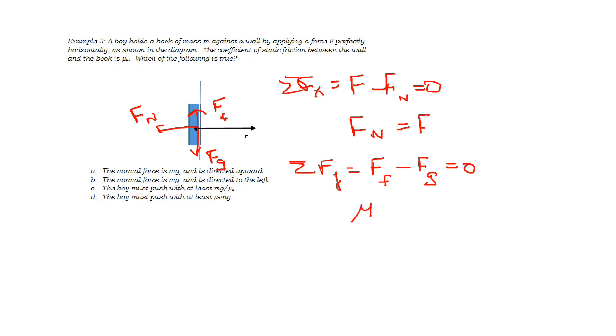The formula for force of friction, we use static times fn. And the formula for force of gravity is mg, still equal to zero. So I can replace the normal force with the force that the boy is pushing with, and bring mg to the other side, and I can see that the force the boy must push with is at least mg over mu s. Choice C.